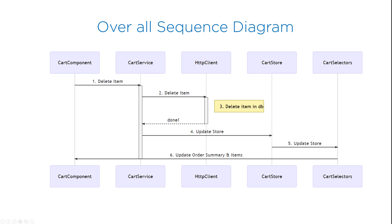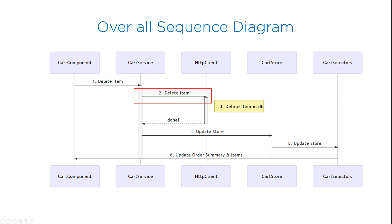Before we code, I will explain the overall architecture using a sequence diagram. For the delete use case: the cart component will make a delete item call to the cart service; the cart service will make an HTTP call to delete an item from the server; and the HTTP client will go to the server and delete the item from your database.